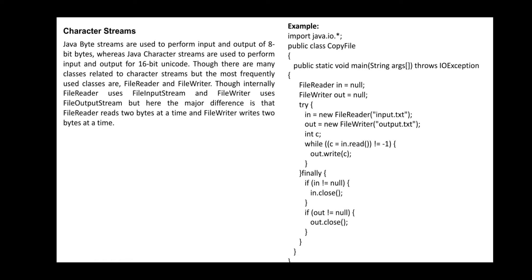Yesterday we started with the second part of the fourth unit, that is Java IO classes. There are two types of stream classes: input stream and output stream. These define subclasses called byte stream classes and character stream classes. Byte streams are used to read or write eight-bit bytes of values, reading eight-bit bytes of information from one file to another.